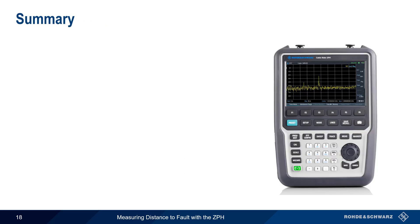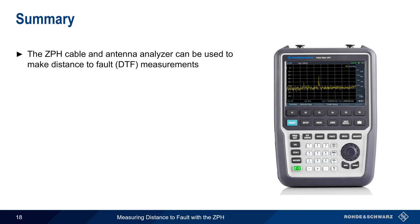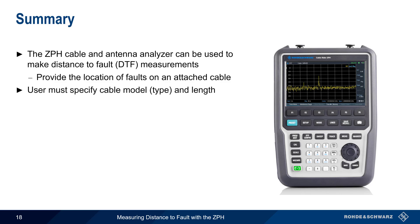Let's end with a brief summary. The Rohde & Schwarz ZPH cable and antenna analyzer can be used to make distance-to-fault measurements, and these provide information about faults on an attached cable. These faults are typically defined as return loss less than a user-specified value. In order to perform a distance-to-fault measurement, the user must specify a cable model or type of cable, as well as the length of the cable. In addition, the span and center frequency of the measurement must be given, although span can be determined automatically by the ZPH.